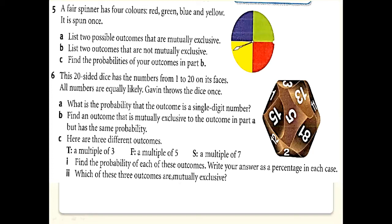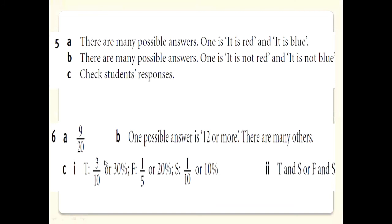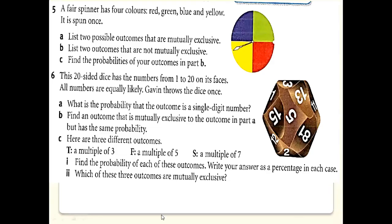Multiples of 5 from 1 to 20 are: 5, 10, 15, 20 — that is 4 outcomes out of 20, giving a probability of 4 by 20, which simplifies to 2 by 10 or 20 percent. Multiples of 7 from 1 to 20 are: 7 and 14 — that is 2 outcomes out of 20, giving a probability of 2 by 20, which is 1 by 10 or 10 percent.